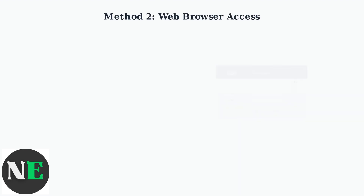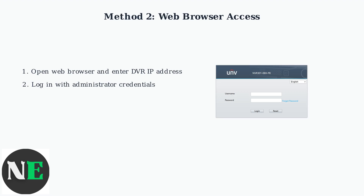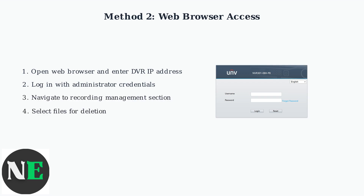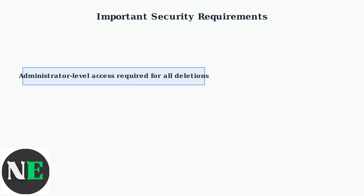Method two uses web browser access. You'll connect to your DVR's IP address and see a login screen where you'll enter your administrator credentials. The web browser method also follows five steps. Start by opening your web browser and entering your DVR's IP address. Then log in using your administrator username and password. Once logged in, navigate to the Recording Management section of the web interface. Here you can browse and select the specific video files you want to delete. Finally, execute the deletion command through the web interface. This method provides a user-friendly way to manage recordings remotely. Both deletion methods require administrator-level access to ensure security.